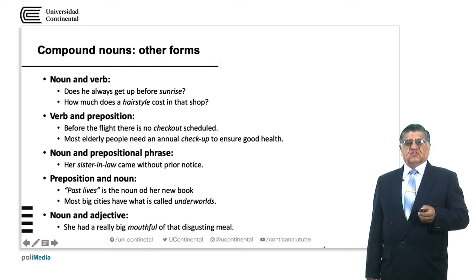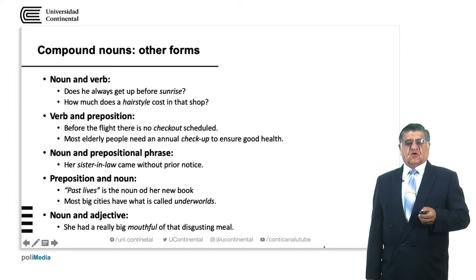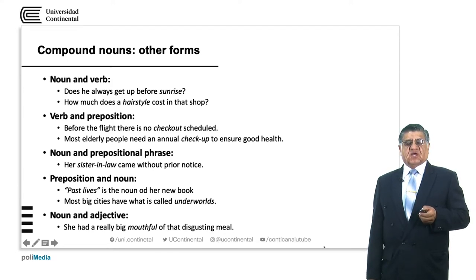Noun and prepositional phrase: 'Her sister-in-law came without prior notice.' Sister-in-law is the sister of your wife or your husband. 'Most big cities have what is called underworlds.' We have already explained that underworld is something that is normally hidden.